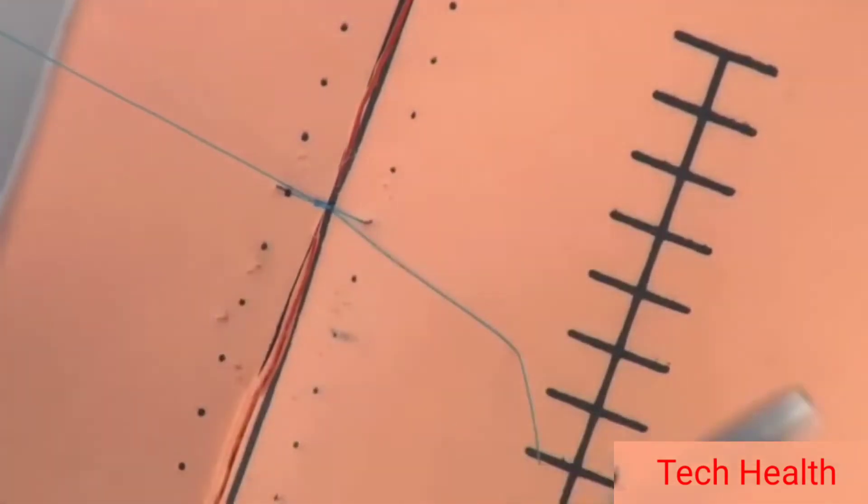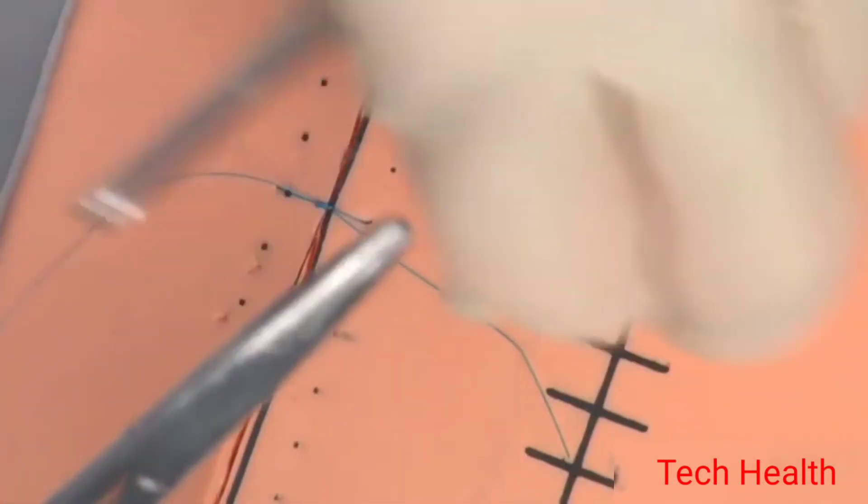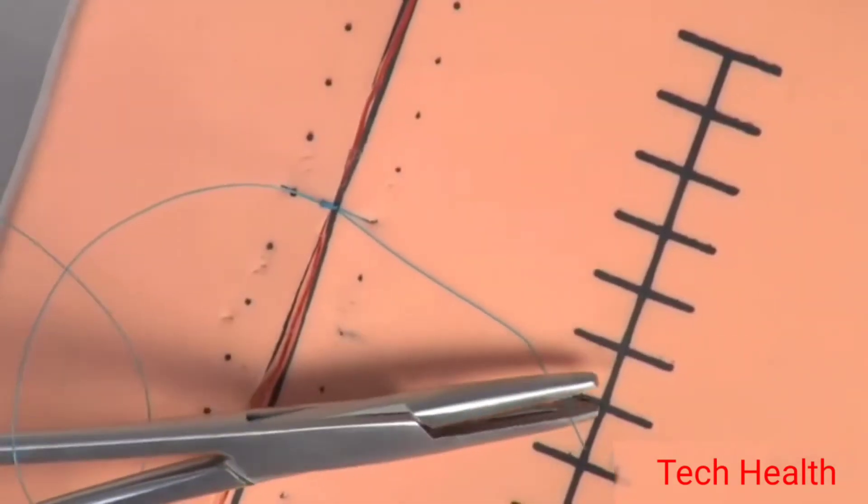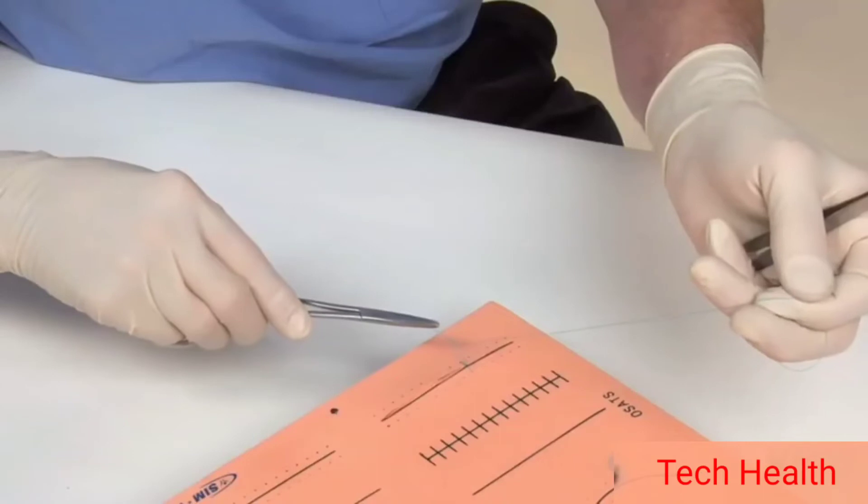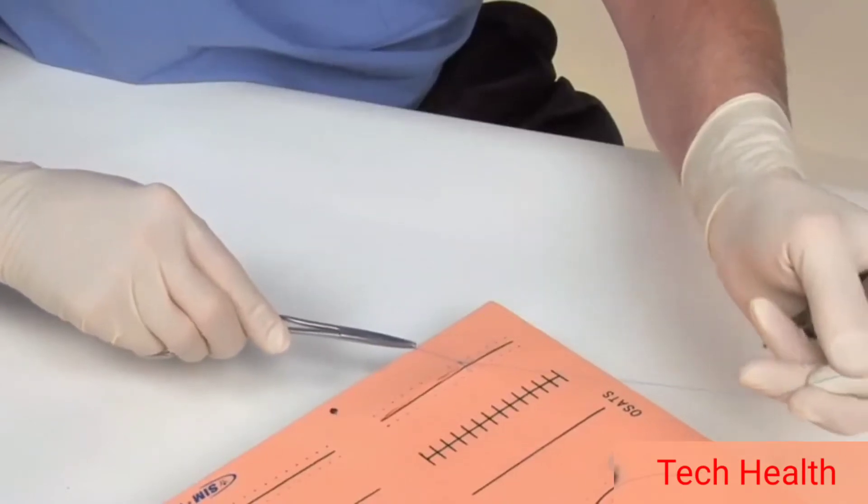Once again, start away from yourself. Move into the long end of the suture. Once around, grab the tag and pull it toward yourself.